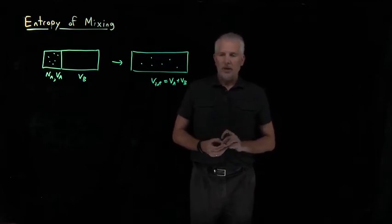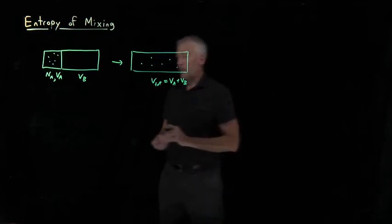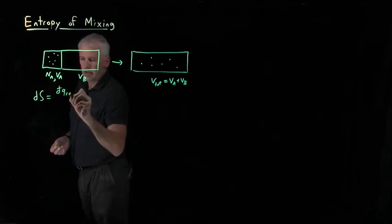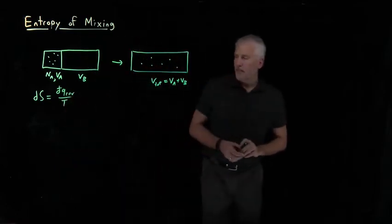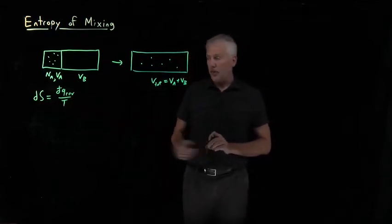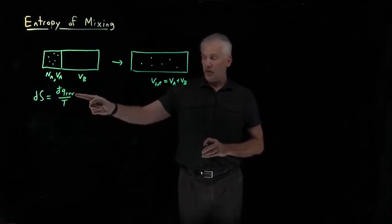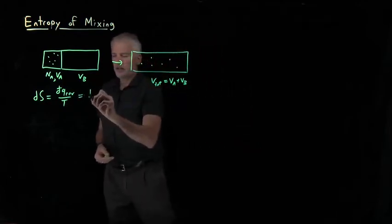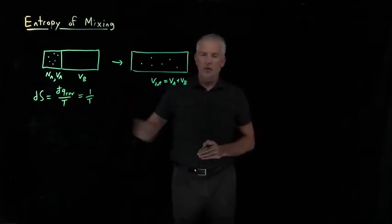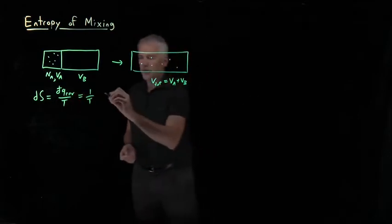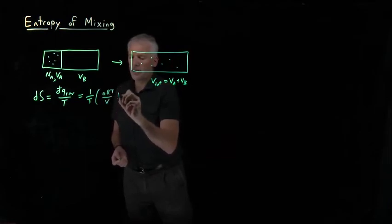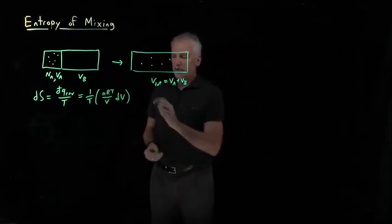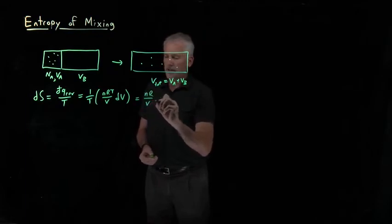We know how to calculate the entropy of expansion of an ideal gas. Going back to the Clausius theorem, the change in entropy is related to the change in heat. We know how to calculate the heat of a reversible isothermal expansion of an ideal gas. If the gas expands isothermally, the 1/T is just 1/T, and dQ for a reversible isothermal expansion equals NRT/V times dV. The T's cancel, leaving dS = NR/V · dV.